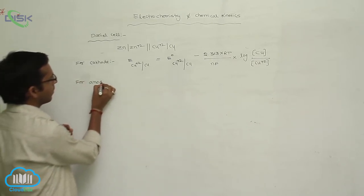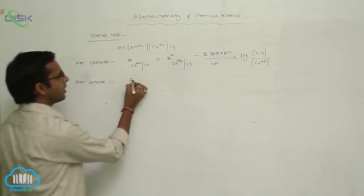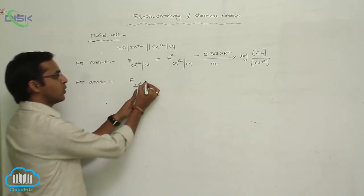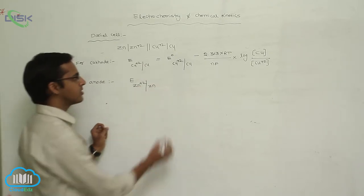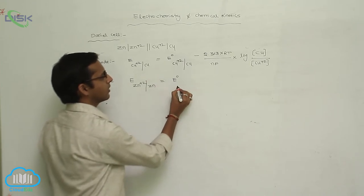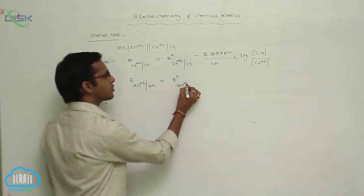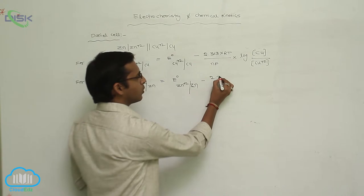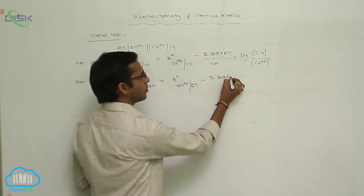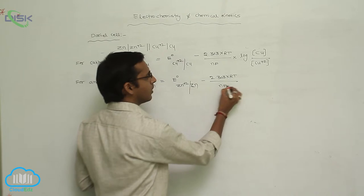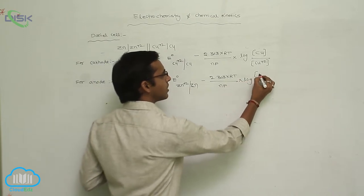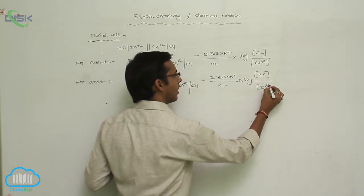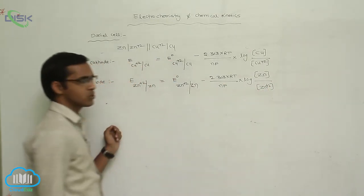For the anode, the Nernst equation again uses the reduction potential value. E_cell equals E⁰ for Zn²⁺ vertical line Zn, minus 2.303 into RT by NF into log — concentration of Zn metal by concentration of Zn²⁺ ion.